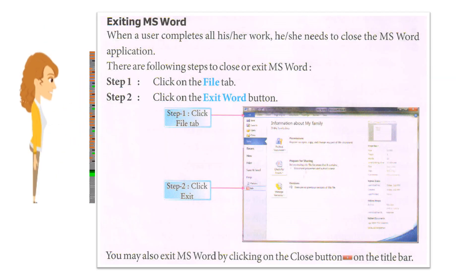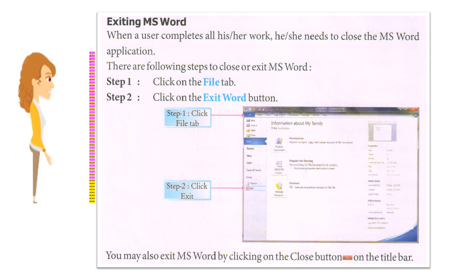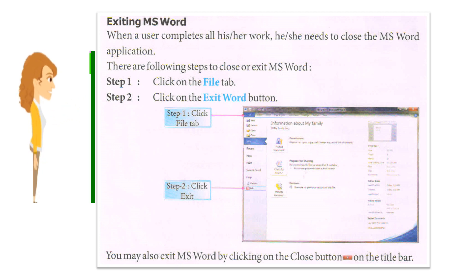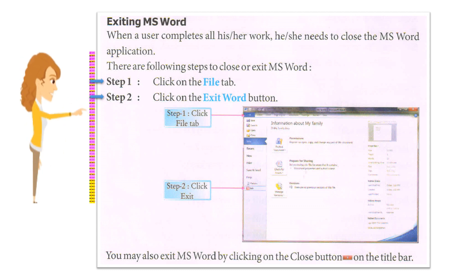Exiting MS Word: When a user completes all his or her work, he or she needs to close the MS Word application. Steps to exit MS Word: Step 1: Click on the File tab. Step 2: Click on the Exit Word button. You may also exit MS Word by clicking on the Close button on the Title Bar.